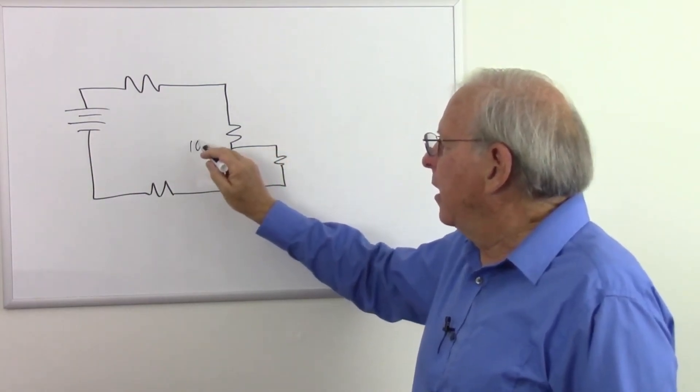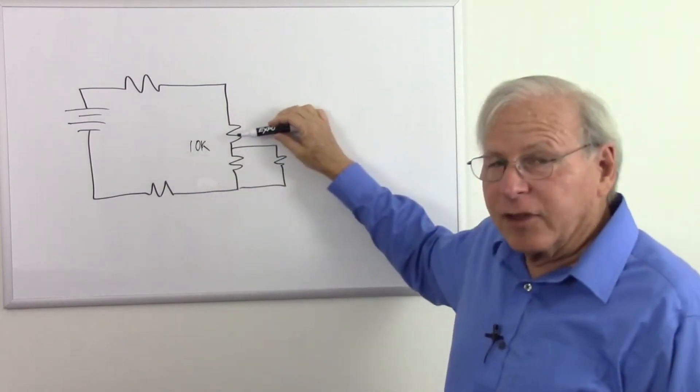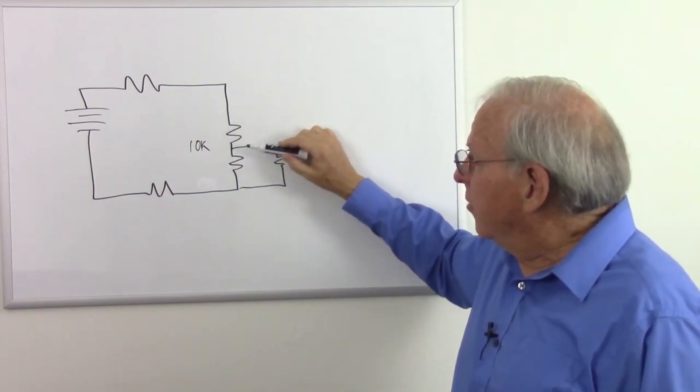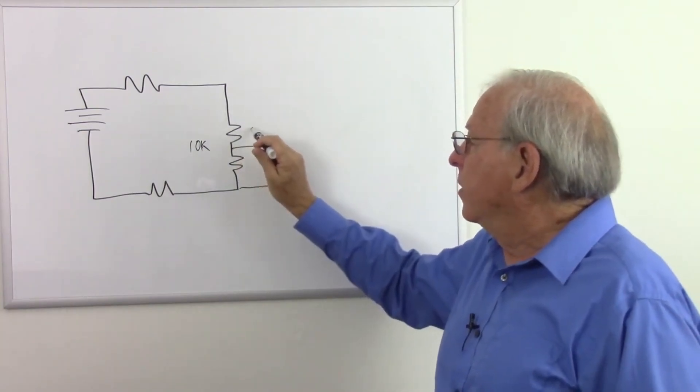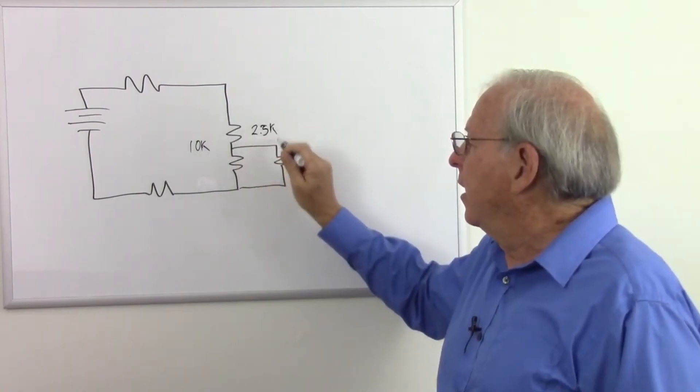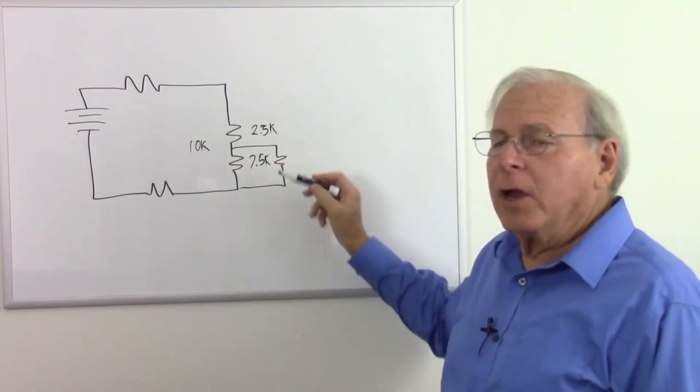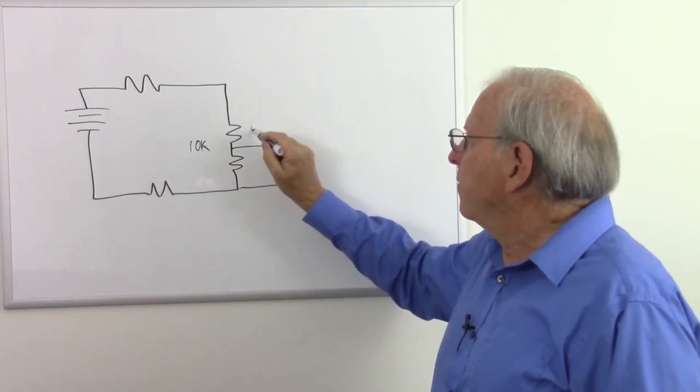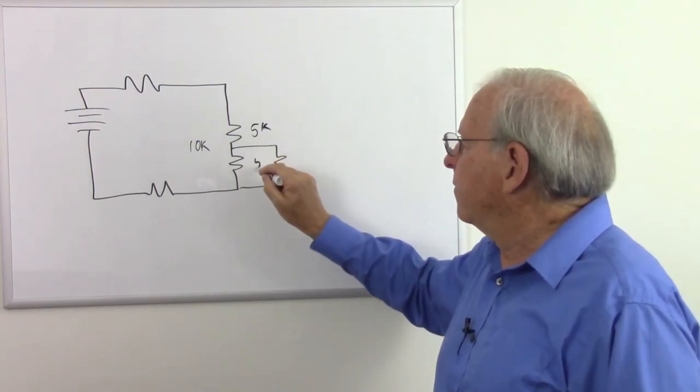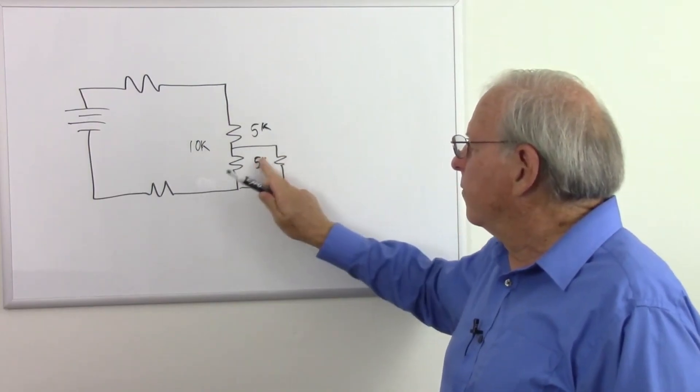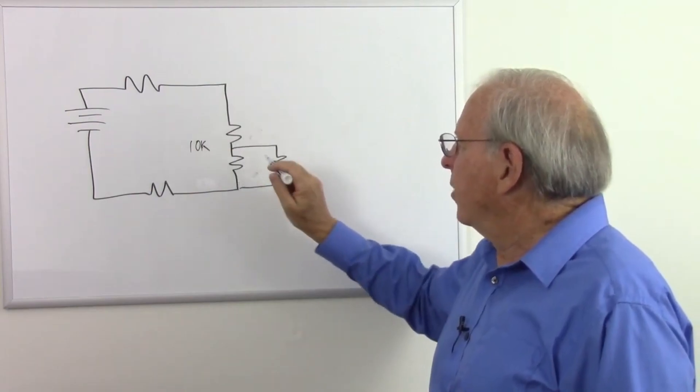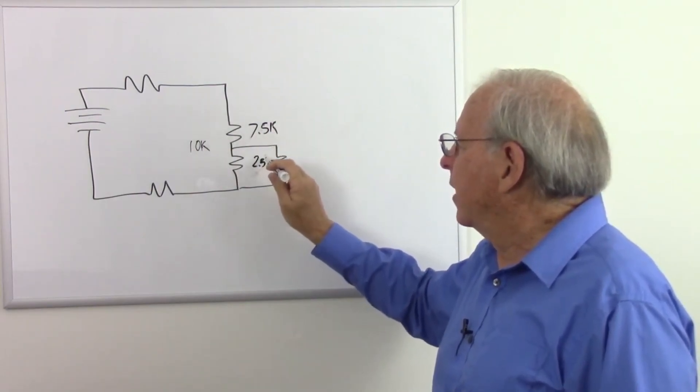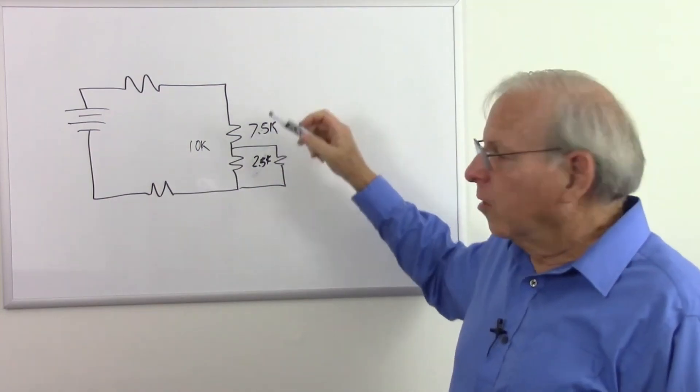So let's say this was a 10k potentiometer. As I move that wiper up and down, what I have is a total of 10k between these. But as I move it up, I might end up with 2.5k here and 7.5k there. Or if I move that wiper down to the middle, I end up with 5k here and 5k here. And as I move it down further, I might end up with this situation where I have 7.5k here and 2.5k here, or smaller or larger.